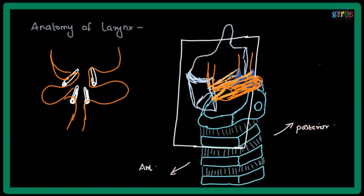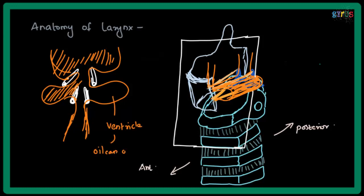There will be a slight outpouching in between these two ligaments and that is known as the ventricle of larynx or oil gland of larynx. The other name is sinus of Morgagni. This is called an oil gland because there are a large number of sebaceous glands present. And this is the vestibule of the larynx.